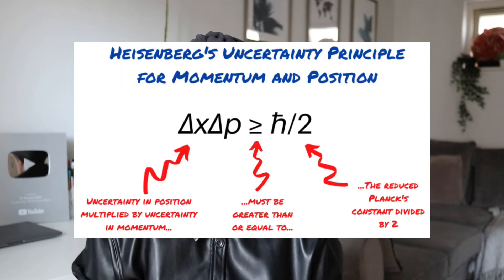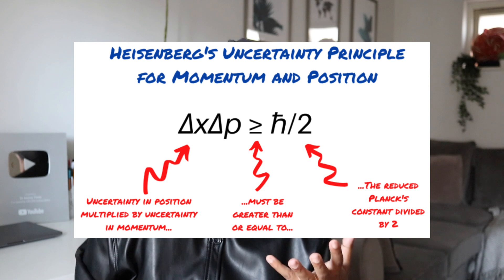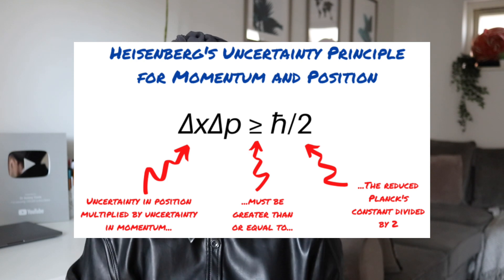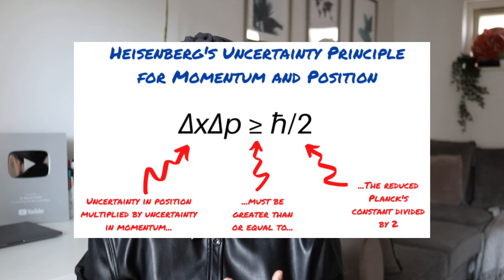I'm not going to bore you with the actual physics itself because, to be completely honest, I don't understand it. But essentially the Heisenberg Principle states that there's an uncertainty expressed as a mathematical inequality: the uncertainty of position multiplied by the uncertainty of momentum should be greater than or equal to a fraction of Planck's constant times pi.